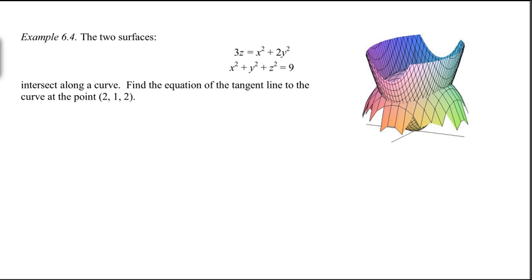Example 6.4. We've got two surfaces here, one a paraboloid and one a sphere, that intersect in a curve. I'm going to draw that curve in black there. And we want to find the equation of the tangent line to the curve at a given point, 2, 1, 2.